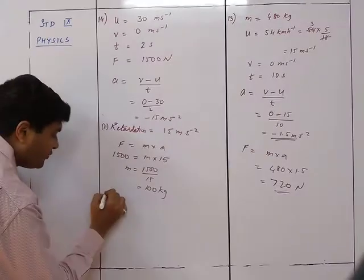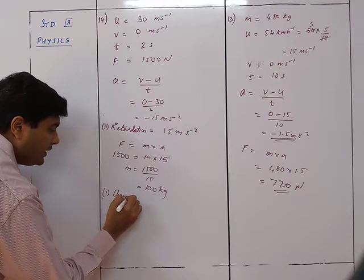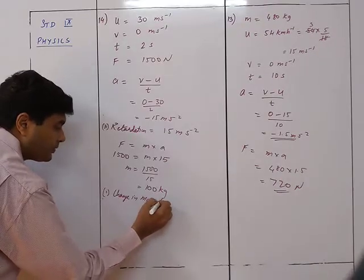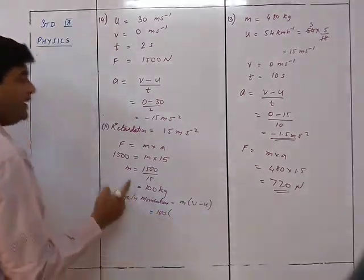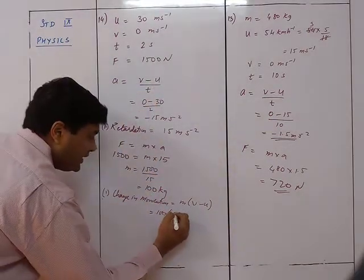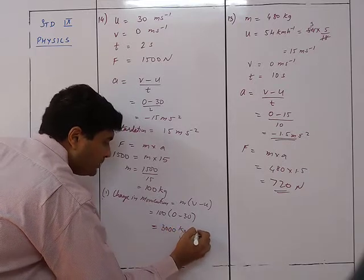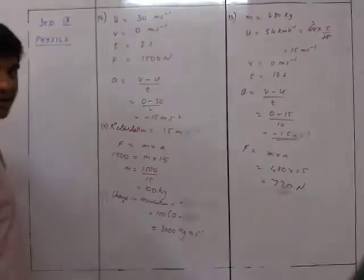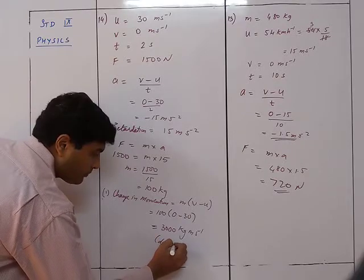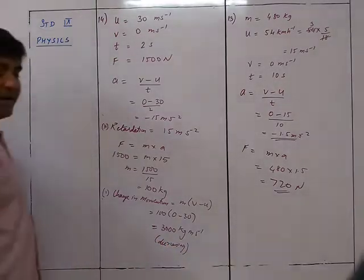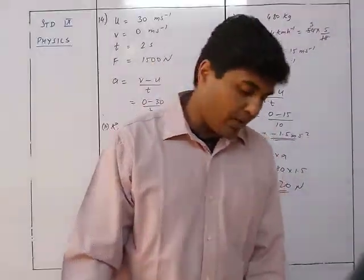Change in momentum equals m(v minus u) equals 100 times (0 minus 30) equals minus 3000 kg meter per second. The negative sign indicates momentum is decreasing — the speed is reducing from initial to final value.